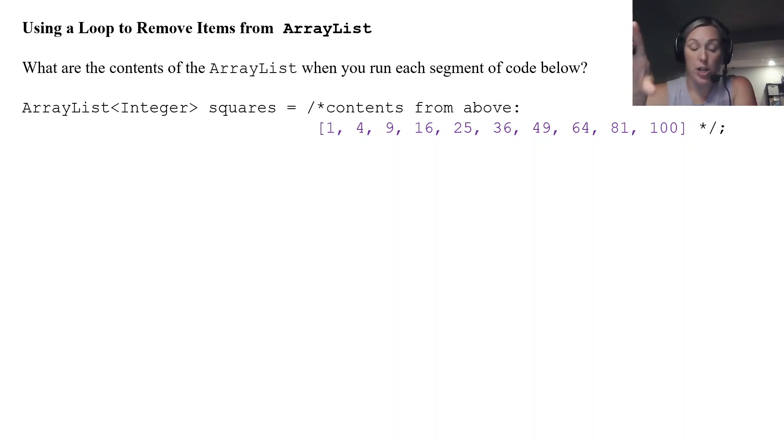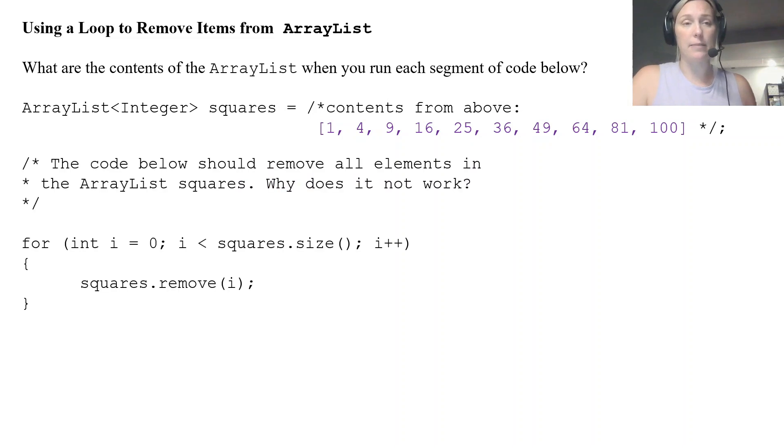And that's why when we get into the next part, removing items, an enhanced for loop will also not be able to remove items. But we'll get to that. Let's talk about a regular for loop. And what are the contents of an ArrayList when we run each segment of code here? So I'm going to use a for loop and then an enhanced for loop. So my ArrayList of squares contains these values. So this is what I just did above when I added values to my ArrayList. This is what it contains.